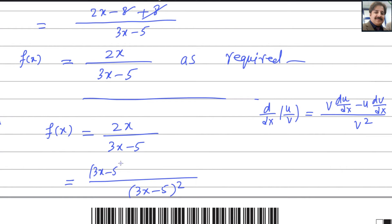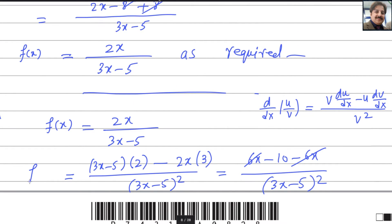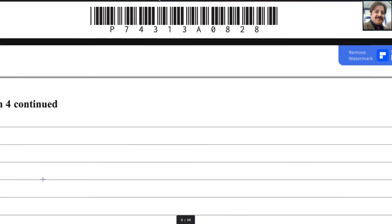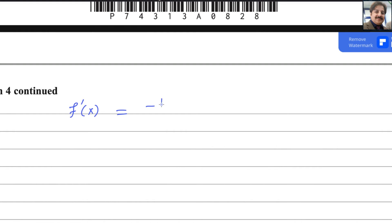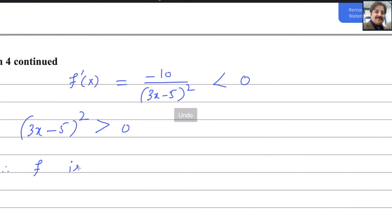Applying the quotient rule: square of the denominator is (3x−5) squared. The derivative of the numerator 2x is 2, and the derivative of the denominator 3x minus 5 is 3. Expanding: 2 times 3x minus 10 minus 6x, all over (3x−5) squared. The 6x terms cancel, giving the derivative of f of x equals negative 10 over (3x−5) squared. Since (3x−5) squared is always positive, the derivative is always less than 0, hence f is decreasing.